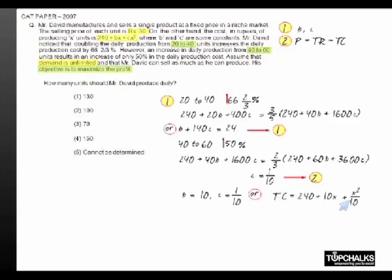The profit is defined as total revenue minus total cost. Since everything produced is being sold, the profit is given by 30N - 240 - 10N - N²/10. Simplifying this: 20N - N²/10 - 240.